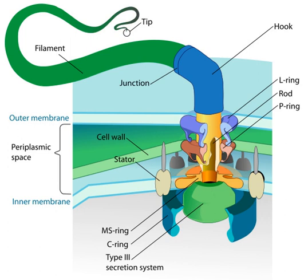The word flagellum in Latin means whip. An example of a flagellated bacterium is the ulcer-causing Helicobacter pylori, which uses multiple flagella to propel itself through the mucous lining to reach the stomach epithelium. An example of a eukaryotic flagellate cell is the mammalian sperm cell, which uses its flagellum to propel itself through the female reproductive tract.